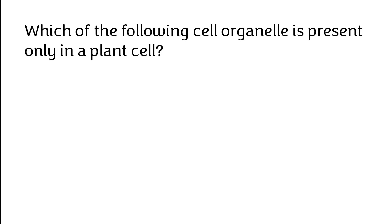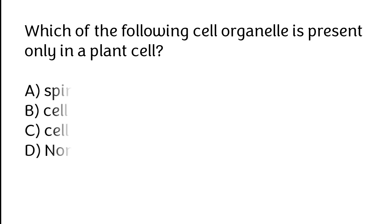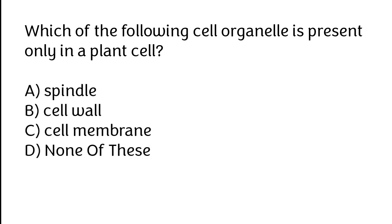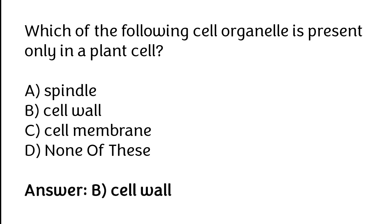Which cell organelle is present only in a plant cell? Spindle, cell wall, cell membrane, or none of these. The correct answer is option B. The cell wall organelle is present only in a plant cell.